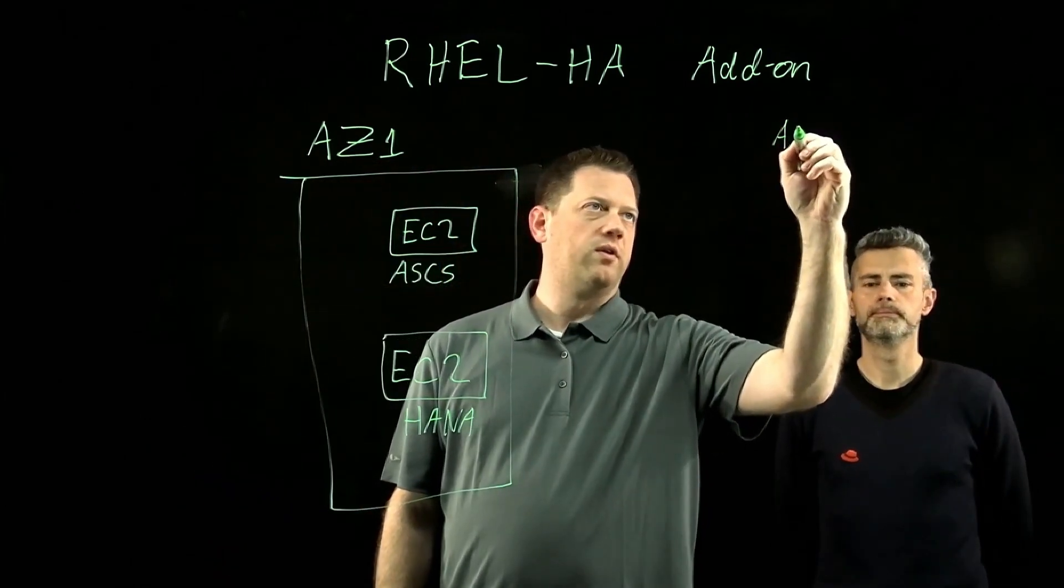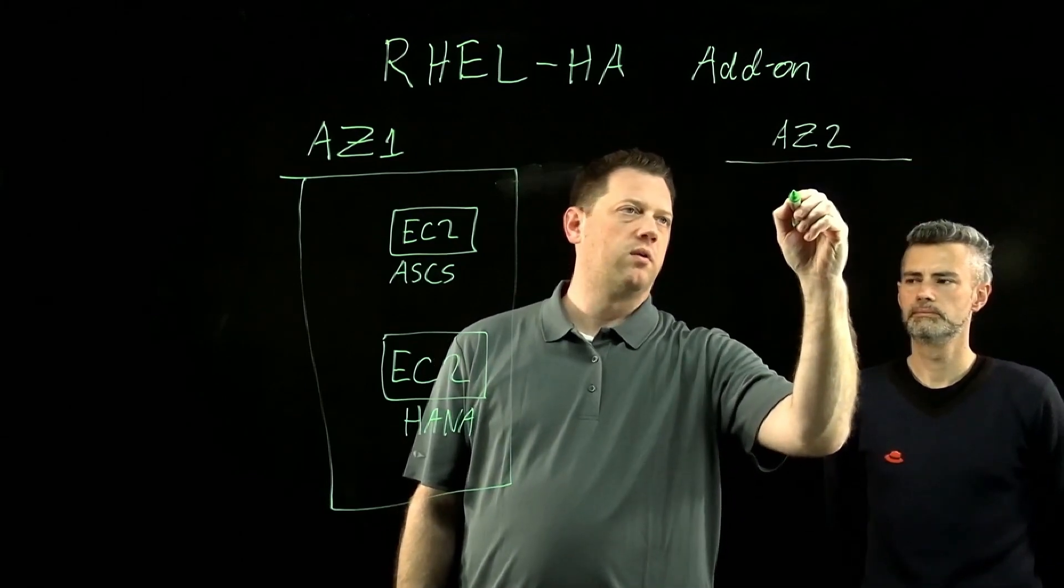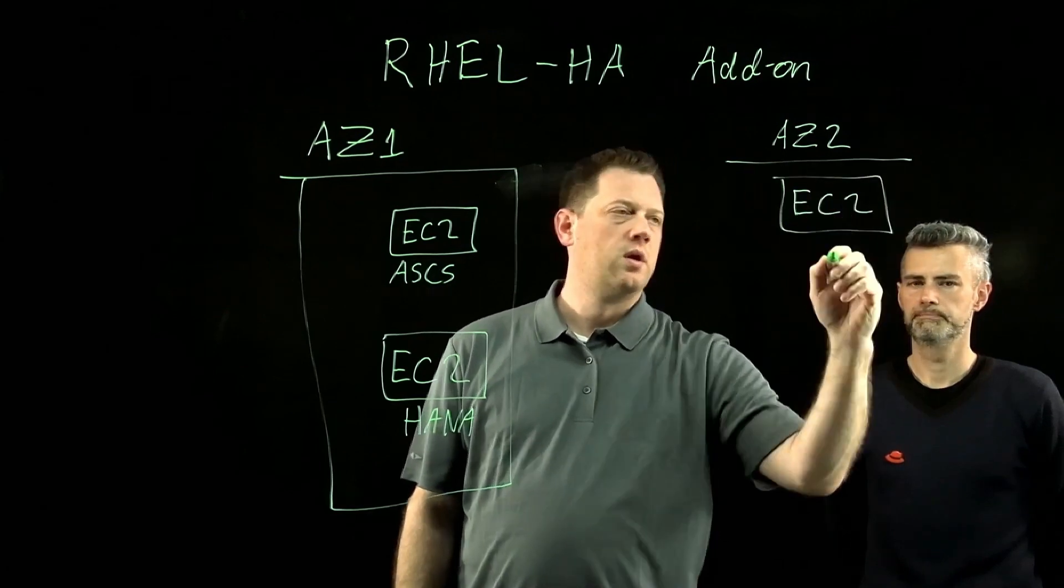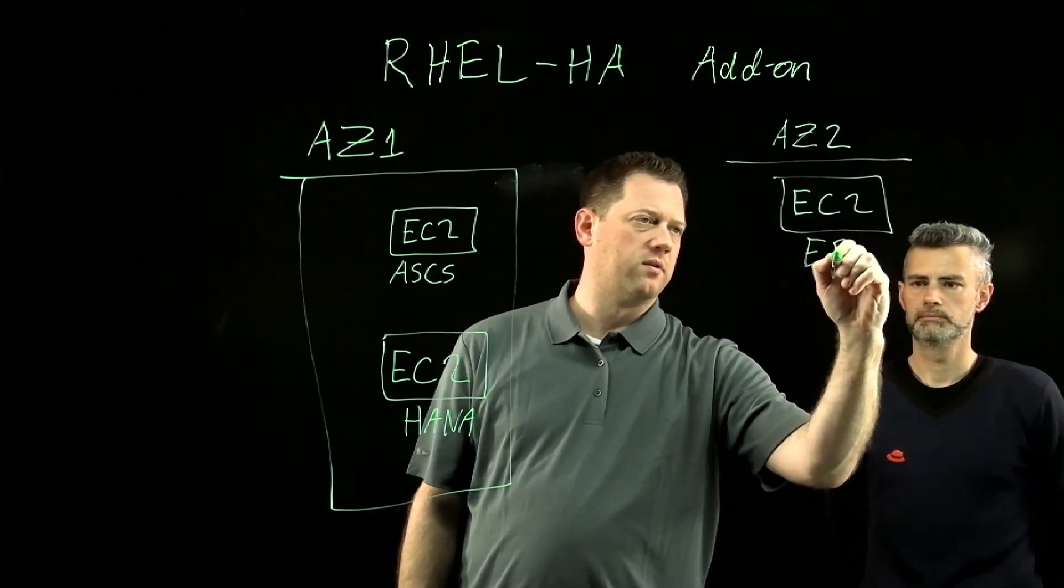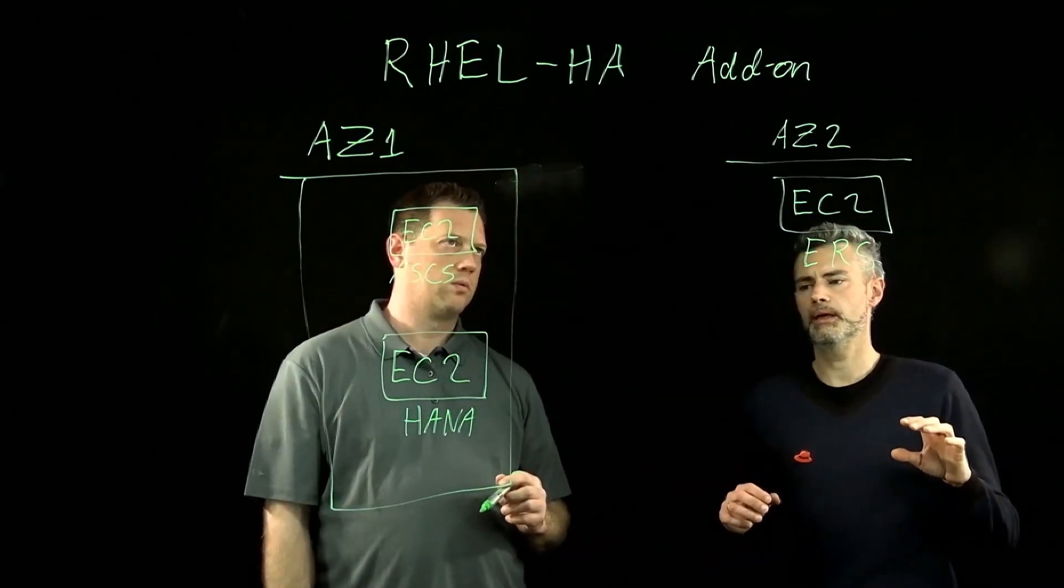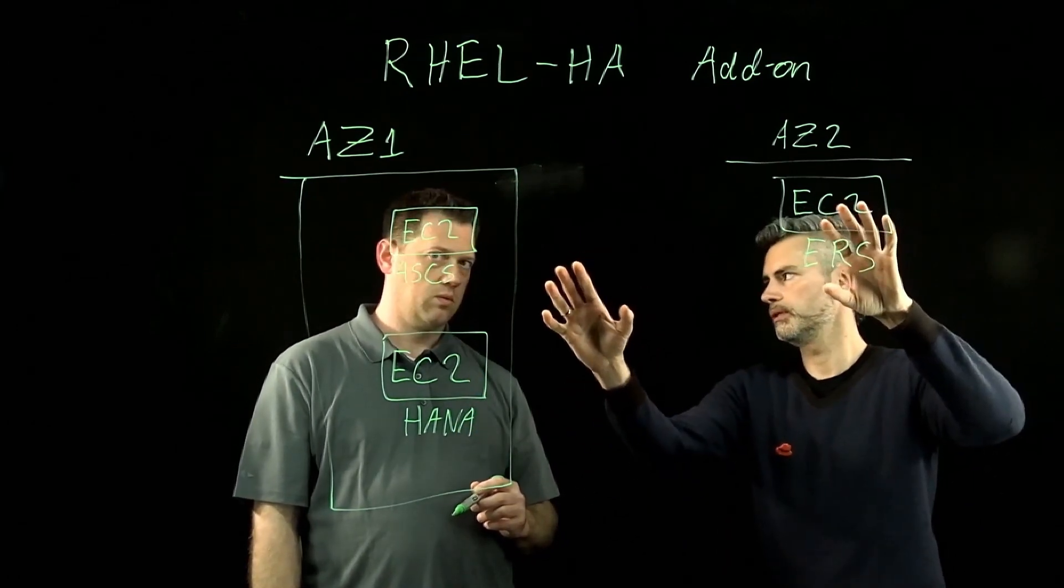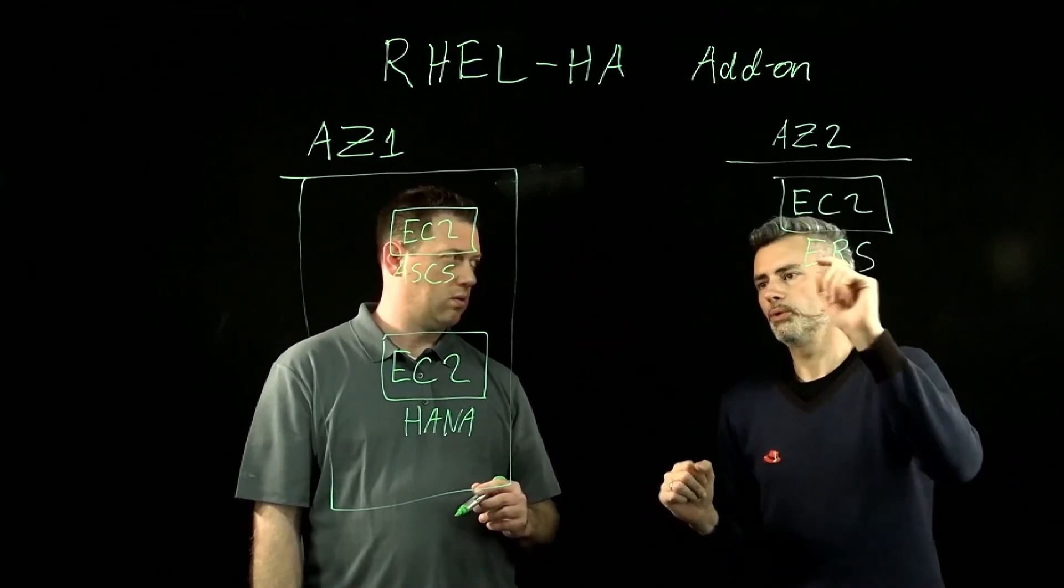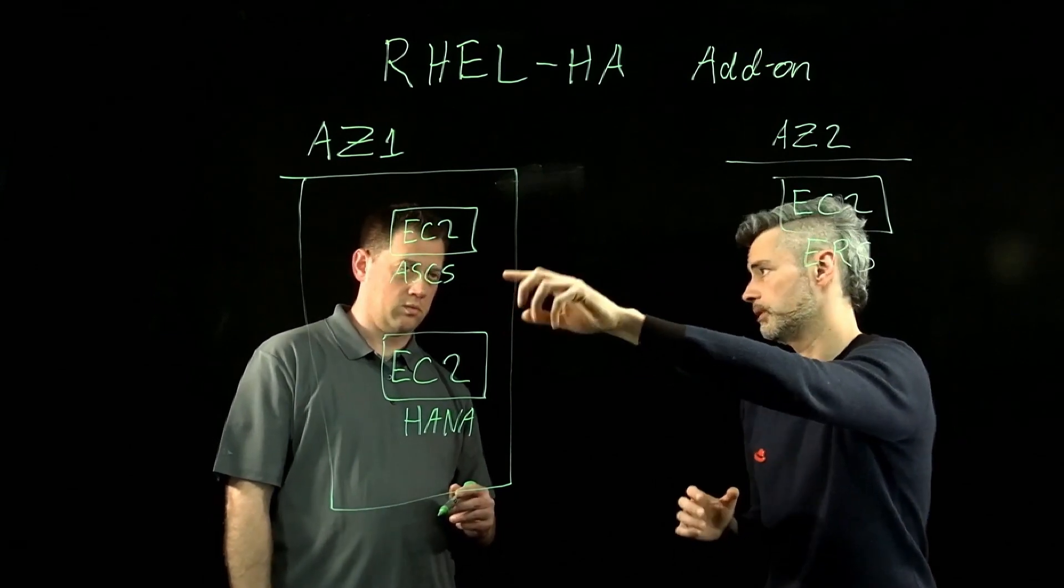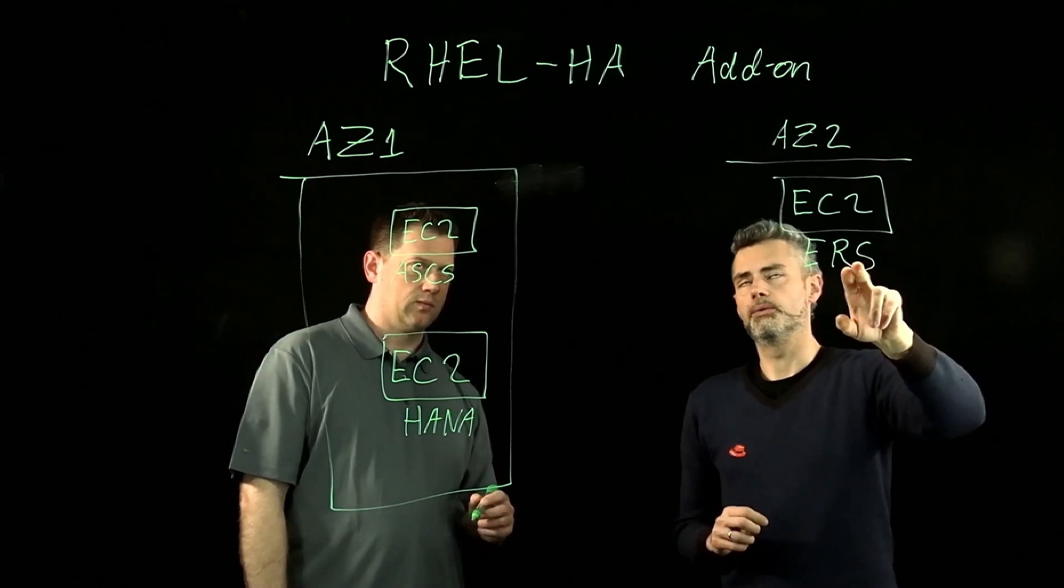All this is in AZ1. Then over here, we have another availability zone, availability zone 2. And we're going to have another EC2 instance here. This one has our ERS on here. So we have two levels here, two tiers. We're going to be having a cluster for the database for SAP HANA, and we're going to be having another cluster for the actual application, for the SAP application. What we want to cluster at application level is mainly the ASCS instance, where all the central services are, and the ERS, Enqueue Replicator Service, where we have a copy of the lock table.